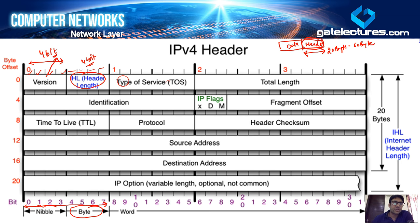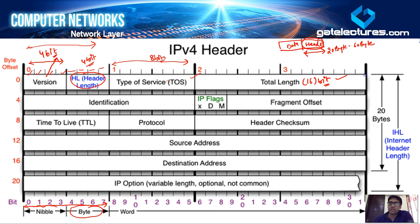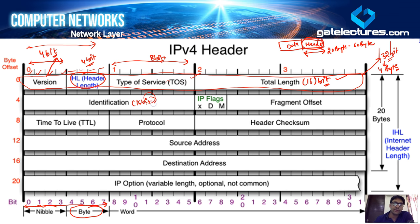Next is the type of service field, which is eight bits. Then we have the total length field, which is 16 bits. So the entire first row — version (4 bits), header length (4 bits), type of service (8 bits), and total length (16 bits) — is a total of 32 bits, or four bytes. The next field is identification, which is 16 bits. We will discuss all these fields in detail, including what values they store.